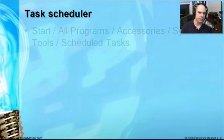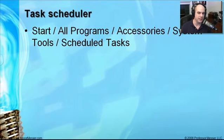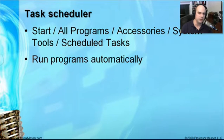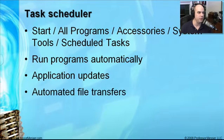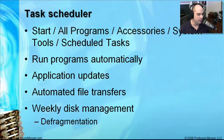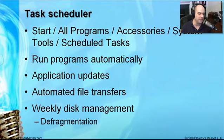Another useful utility that ships with Windows is the task scheduler, found under Start > All Programs > Accessories > System Tools > Scheduled Tasks. The task scheduler runs programs automatically at a predetermined time of day, automating a lot of functionality. You can automate application updates, file transfers — for example, running an automated file transfer at 3 o'clock every morning — or schedule defragmentation to run automatically once a week when you're away from your desk.